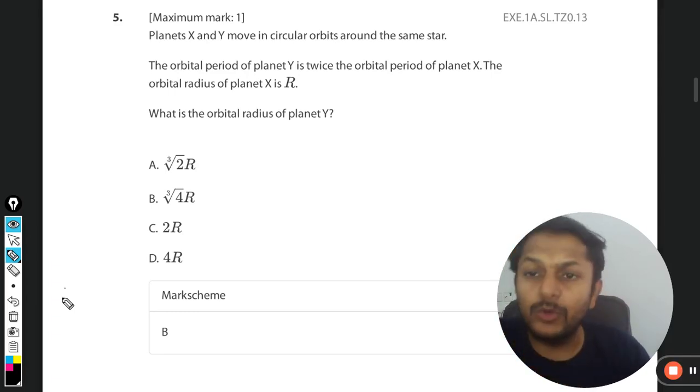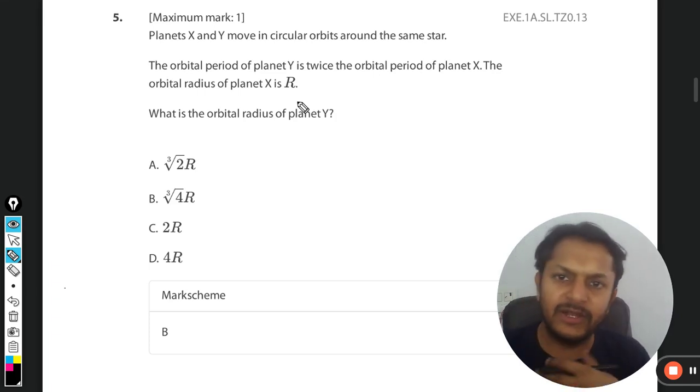Okay dear student, let's see what is there in this question. Planets X and Y move in circular orbits around the same star. The orbital period of planet Y is twice the orbital period of planet X. The orbital radius of planet X is R. What is the orbital radius for planet Y?